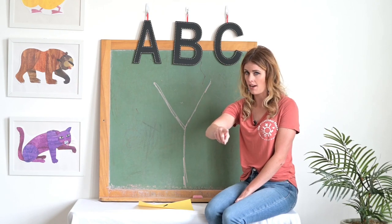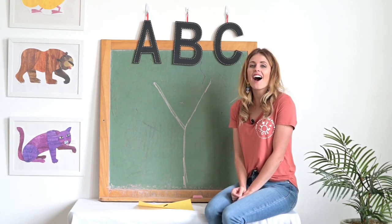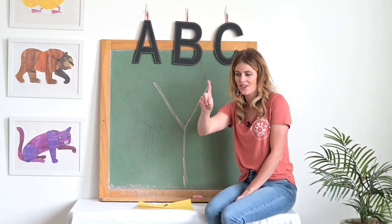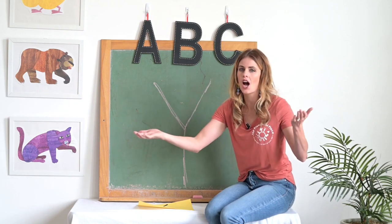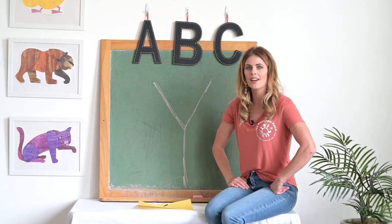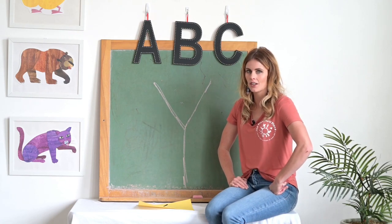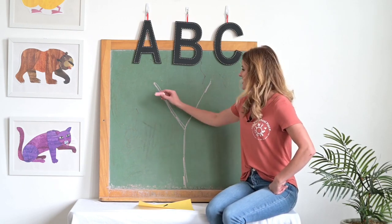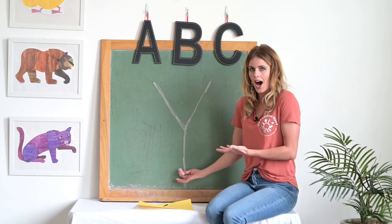Let's be Elsa: slant down, slant down, down Y. Can you yodel with me? Y, y, yodel starts with Y. Yodel, yodel, yodel. Let's try it: slant down, slant down, down Y.